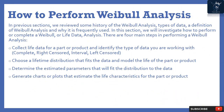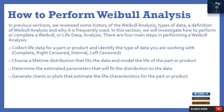In previous sections we reviewed some history of Weibull analysis, types of data, a definition, and why it is frequently used. In this section we will investigate how to perform a Weibull analysis. There are four main steps: first, collect life data for a part or product and identify the type of data — complete, right censored, interval, or left censored.